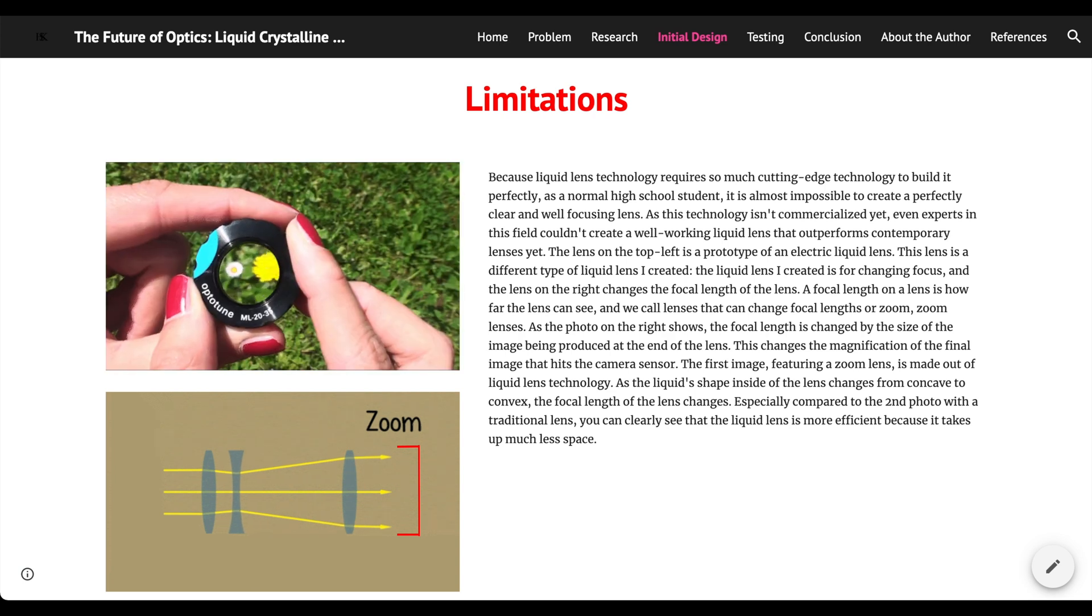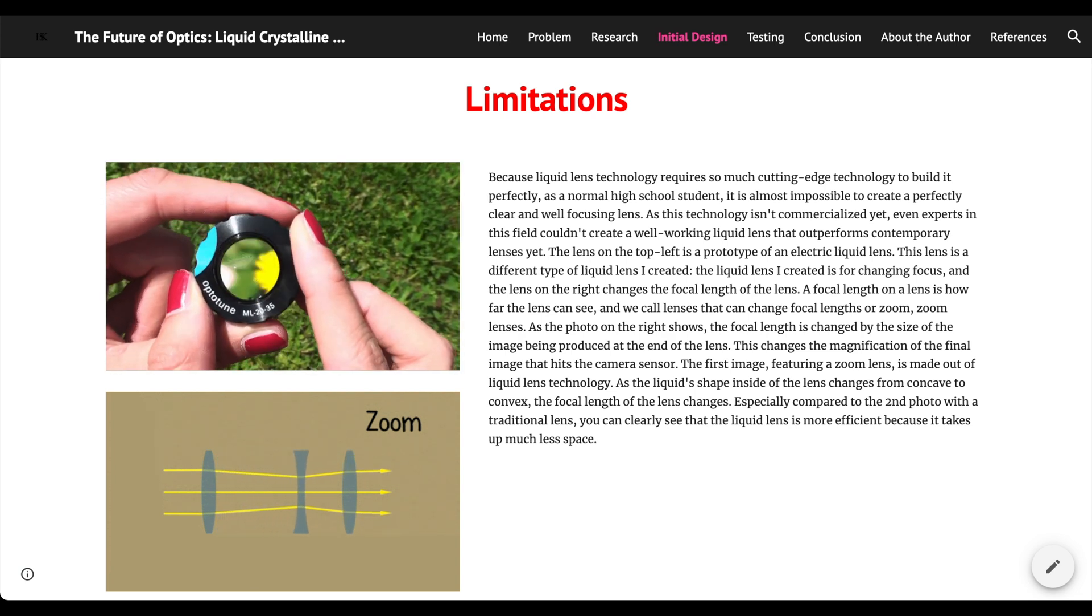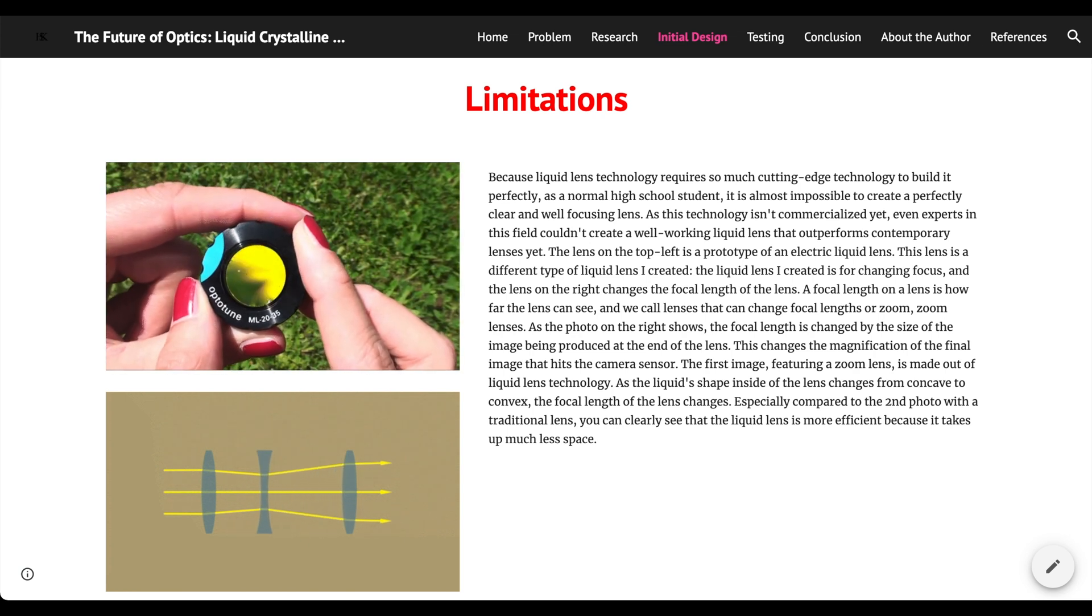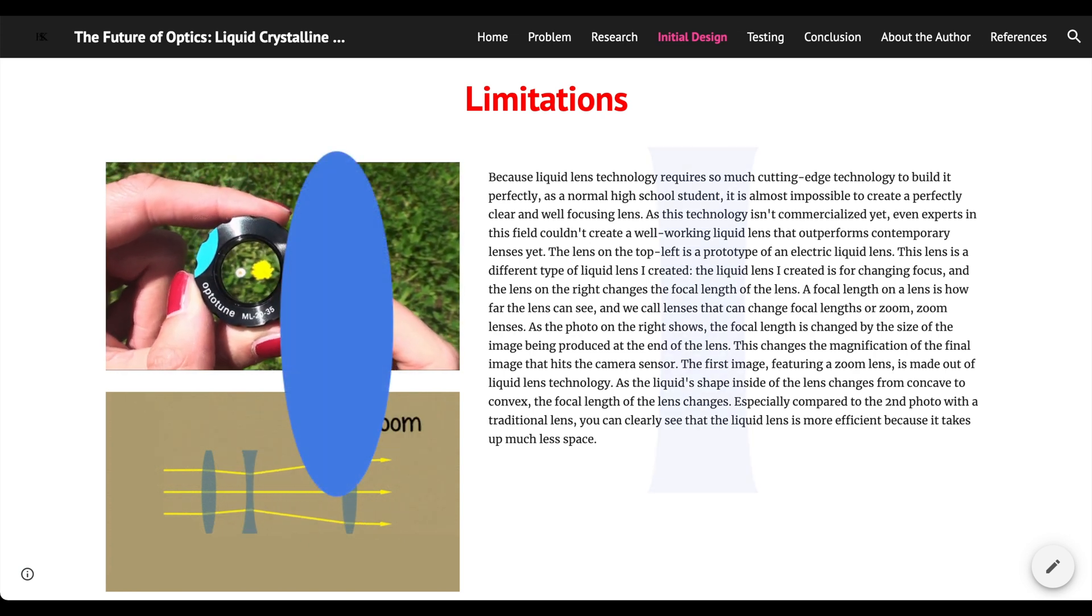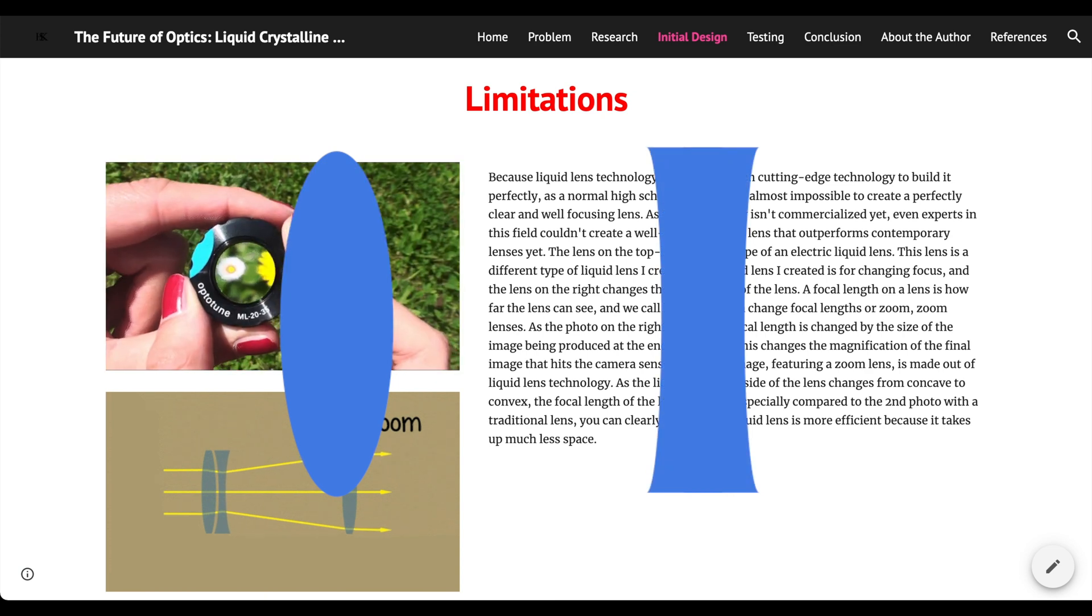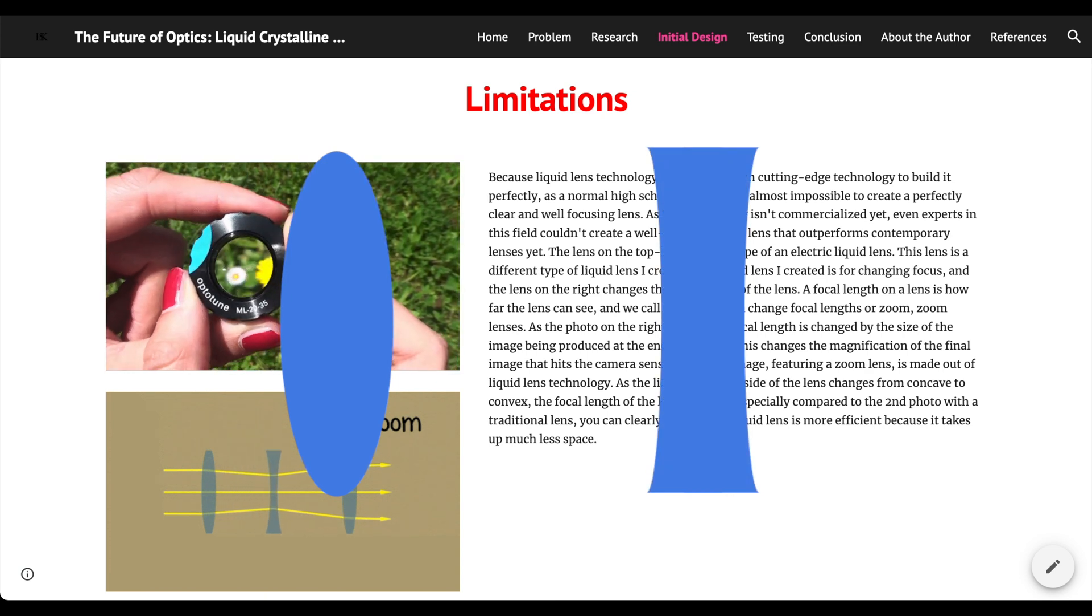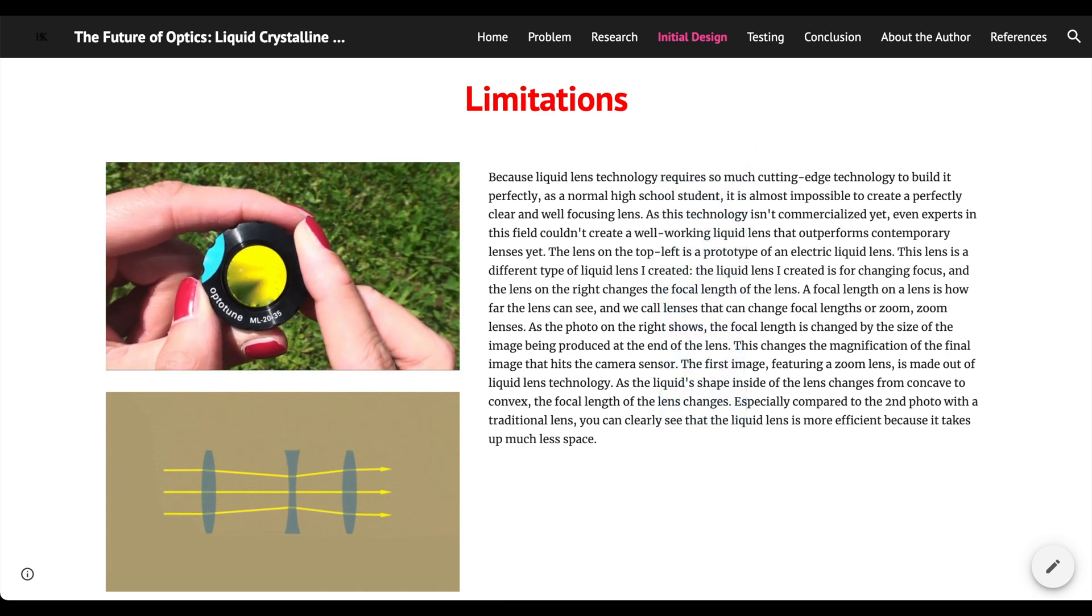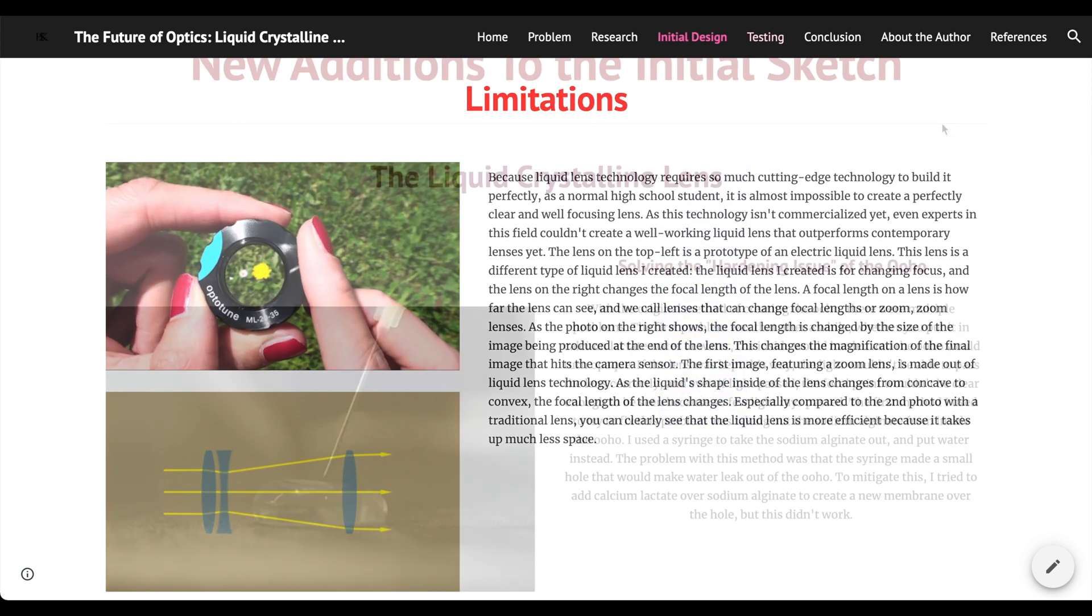This changes the magnification of the final image that hits the camera sensor. The first image, featuring a zoom lens, is made out of liquid lens technology. As the liquid shape inside the lens changes from concave to convex, the focal length of the lens changes, especially compared to the second photo with a traditional lens. You can clearly see that the liquid lens is more efficient because it takes up much less space.